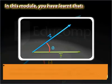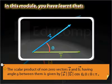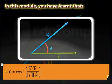In this module, you have learned that the scalar product of non-zero vectors A and B having angle theta between them is given by the magnitude of vector A times the magnitude of vector B times cos theta. Where theta is the measure of the smaller angle between vectors A and B, theta is given by cos inverse of the dot product of vectors A and B divided by the magnitude of vector A times the magnitude of vector B.